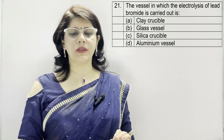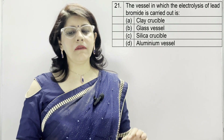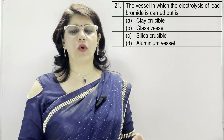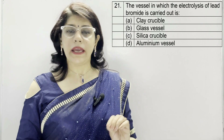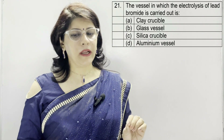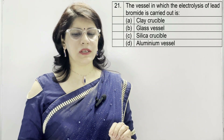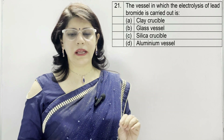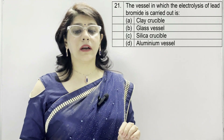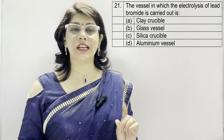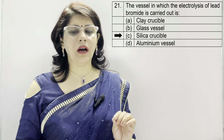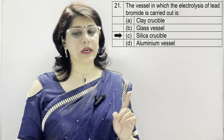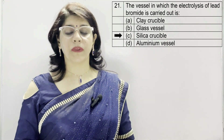In question number 21: the vessel in which the electrolysis of lead bromide is carried out is — A: clay crucible, B: glass vessel, C: silica crucible, D: aluminium vessel. The correct option is C — silica crucible — and we should know the reason why we use it.